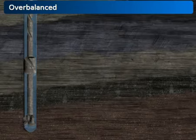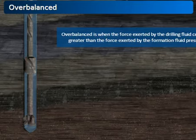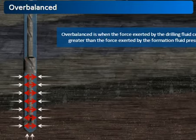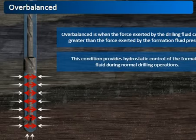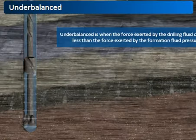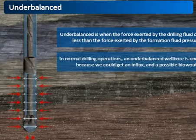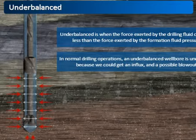There are two conditions that a well may be in: either overbalanced or underbalanced. Overbalanced is when the force exerted by the drilling fluid column is greater than the force exerted by the formation fluid pressure. This condition provides hydrostatic control of the formation fluid during normal drilling operations. Underbalanced is when the force exerted by the drilling fluid column is less than the force exerted by the formation fluid pressure. In normal drilling operations, an underbalanced wellbore is undesirable, because we could get an influx of formation fluids into the wellbore — also known as a kick — potentially leading to a blowout.